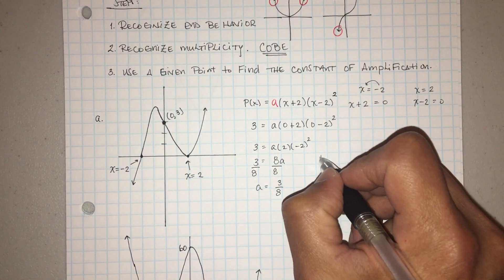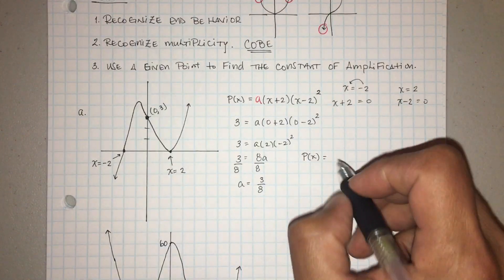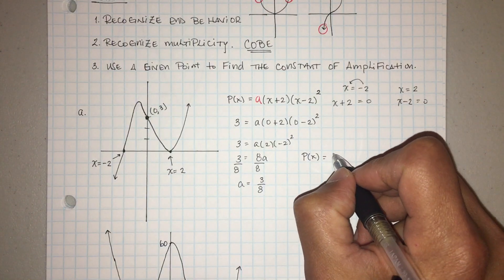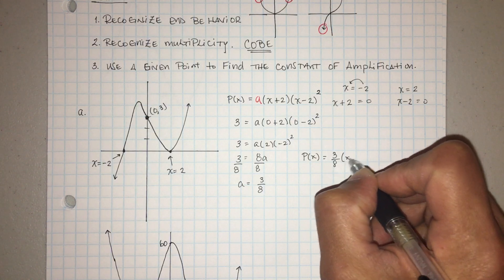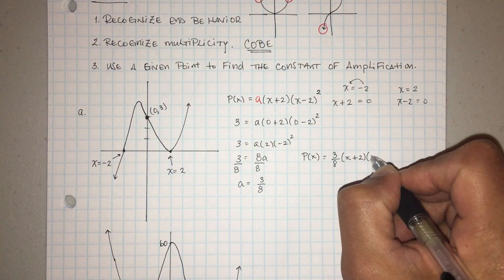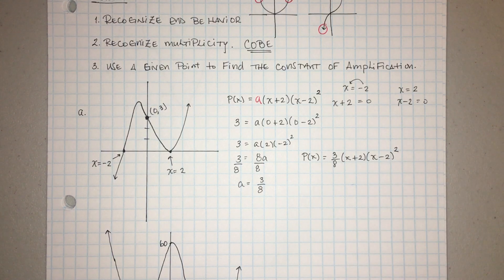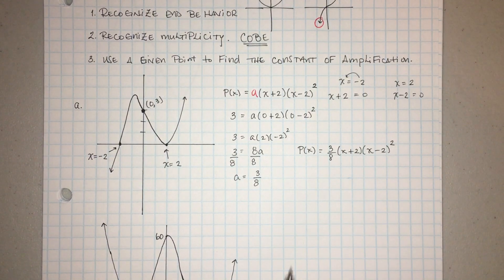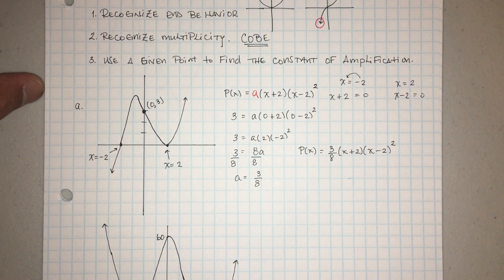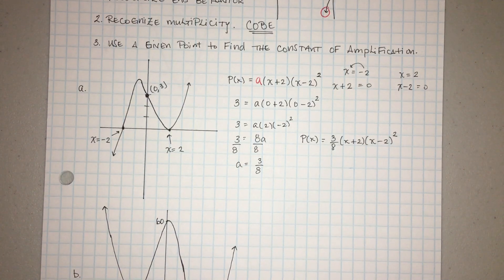Zero plus two is two; zero minus two is negative two, and we square that to get four. Four times two is eight. So we have 8a equals 3. Dividing both sides by eight, that constant in the front is gonna be 3/8. So my final polynomial equation is 3/8 times (x plus 2) times (x minus 2) squared. Of course you can expand it, but this should be enough for your professor or teacher.